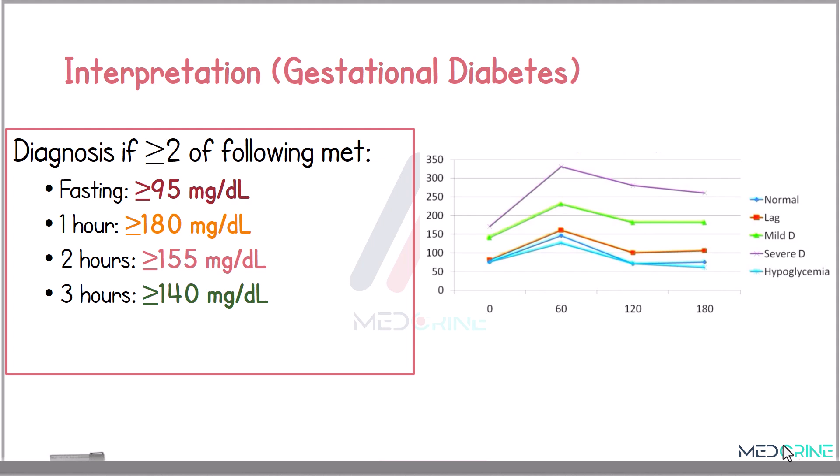A diagnosis of gestational diabetes is made if two of the following conditions are met: a fasting blood glucose of greater than or equal to 95 mg/dL; at one hour, a reading of greater than or equal to 180 mg/dL; at two hours, a reading of greater than or equal to 155 mg/dL; or at three hours, a reading of greater than or equal to 140 mg/dL.